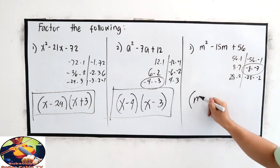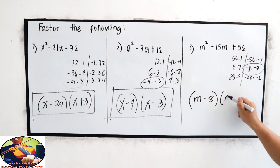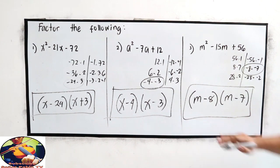So the factors are m minus 8, m minus 7. This is now our factor.